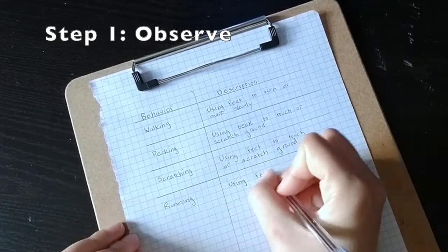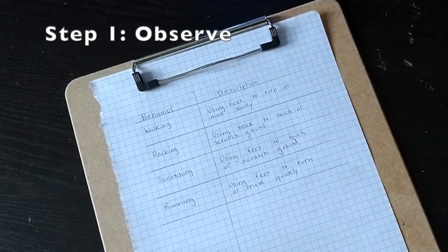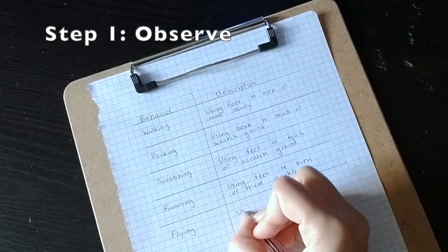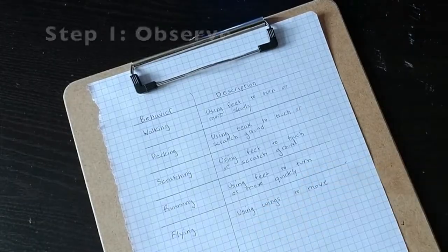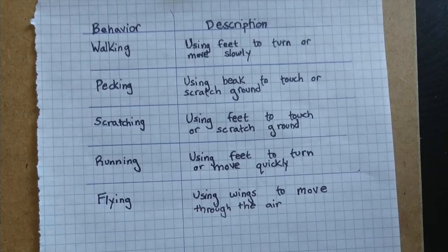Make a list of these behaviors and make sure to define them so that they can be categorized. These definitions that you make for behaviors are an example of an operational definition, which is a clear, concise, detailed definition of a measure. It is important to clearly define your behaviors so that it is easy to distinguish one from another.